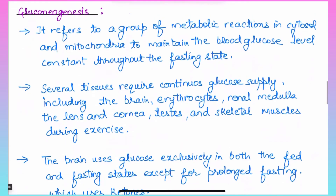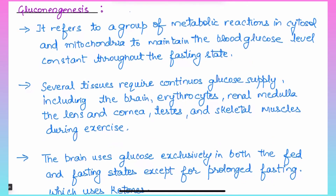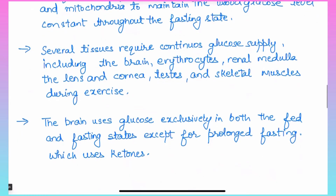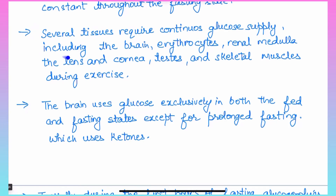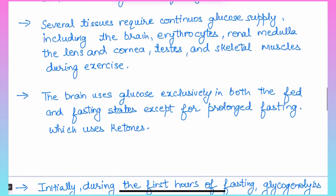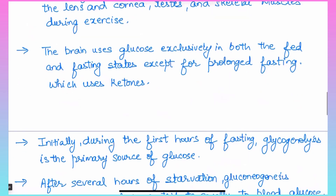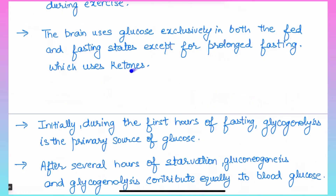Gluconeogenesis is required by tissues like brain, erythrocytes, renal medulla, lens and cornea, testis, and skeletal muscle during exercise. Brain uses glucose exclusively in both the fed and fasting states, except during prolonged fasting when it uses ketone bodies. Unlike other tissues that can rely on fatty acids, when glucose cannot be synthesized endogenously during prolonged fasting, fatty acids are converted into ketone bodies and utilized by the brain.